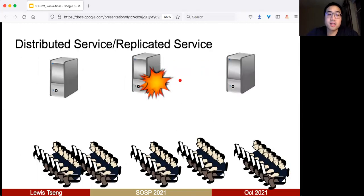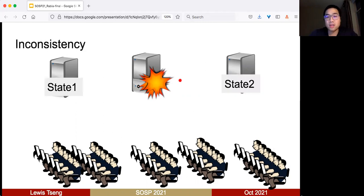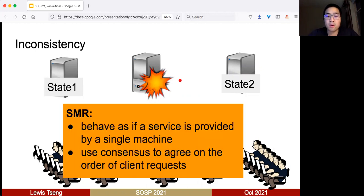So why do we need SMR? Most modern servers are replicated to provide fault tolerance and scalability, but because of failure or message delays, machines will see different states, which is undesirable. We need SMR so the service is provided similarly to a single machine. The way to achieve that is using consensus protocols to agree on the ordering of client requests.